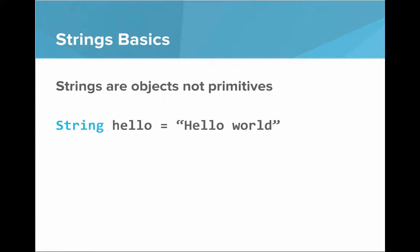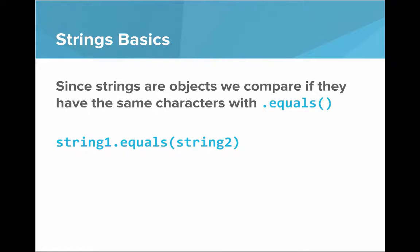And remember, strings are objects, not primitives. So I've highlighted string here in blue because you can see it's starting with a capital S, which means it's an object. And since strings are objects, we compare if they have the same characters with that dot equals method, not with equals equals. So string one dot equals string two would be the right way to test for equality of having the same characters.